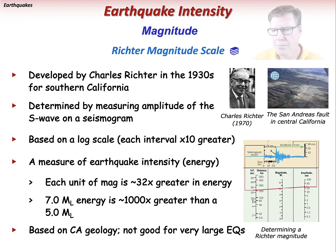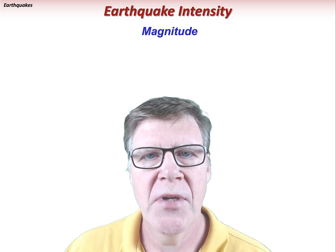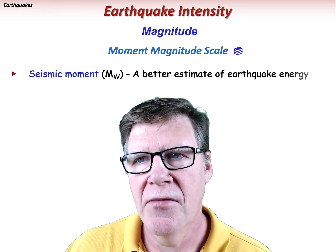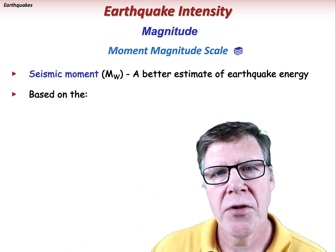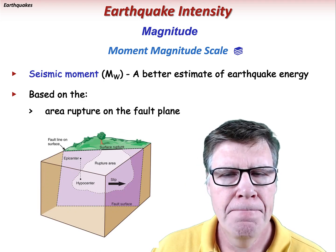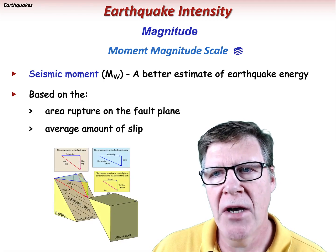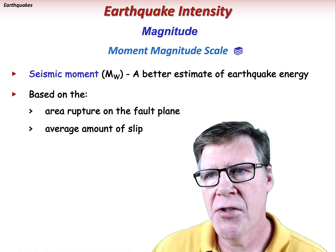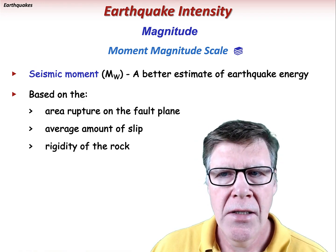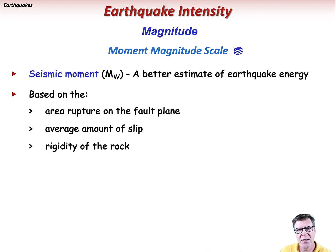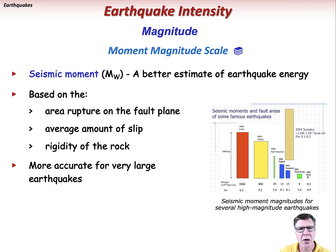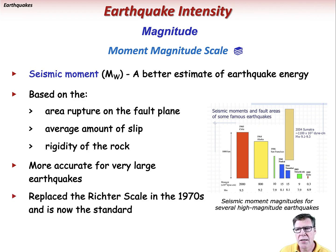The seismic moment magnitude provides a better estimate of earthquake energy than other techniques. The seismic moment of an earthquake is proportional to the area of the rupture along the fault plane times the average amount of slip on the fault, and it also takes into account the rigidity of the rock — thus measuring the physical size of the earthquake event. Unlike other scales, it provides an accurate magnitude estimate for the largest earthquakes. The seismic moment magnitude scale replaced the Richter scale in the 1970s and is now the standard used worldwide.